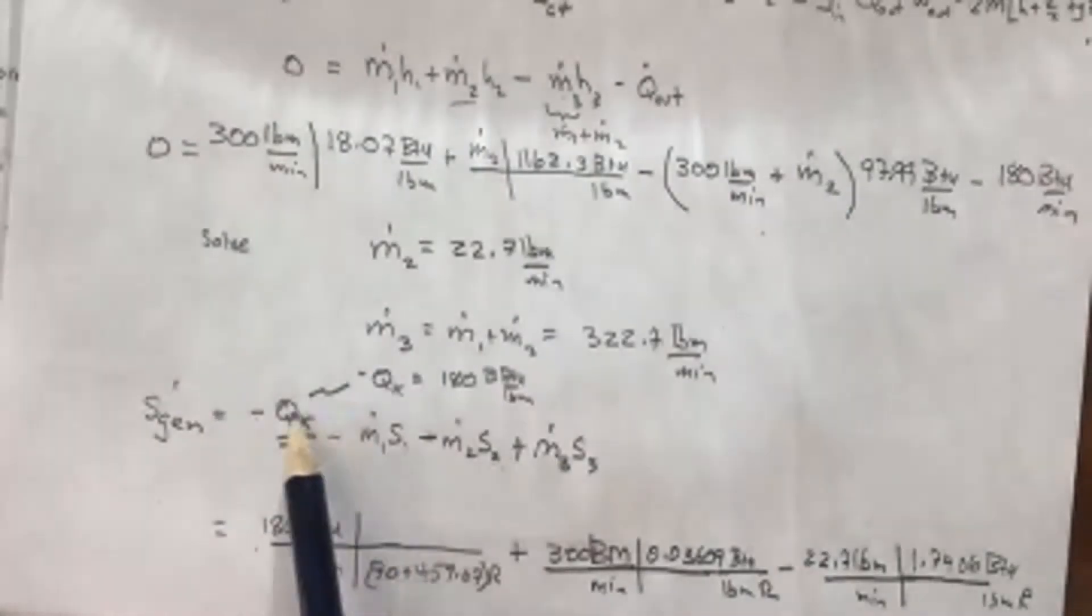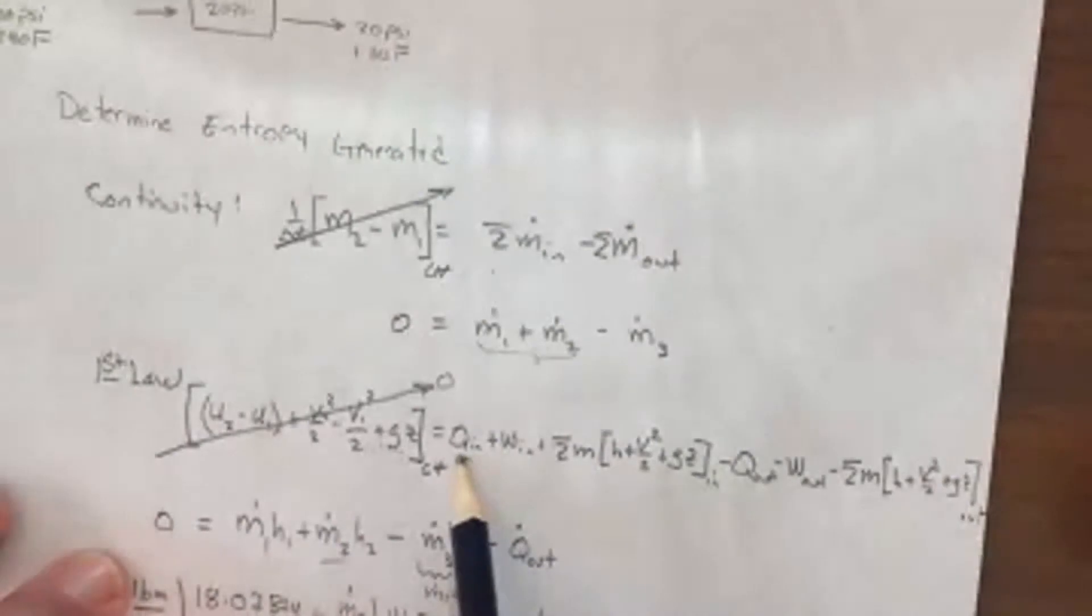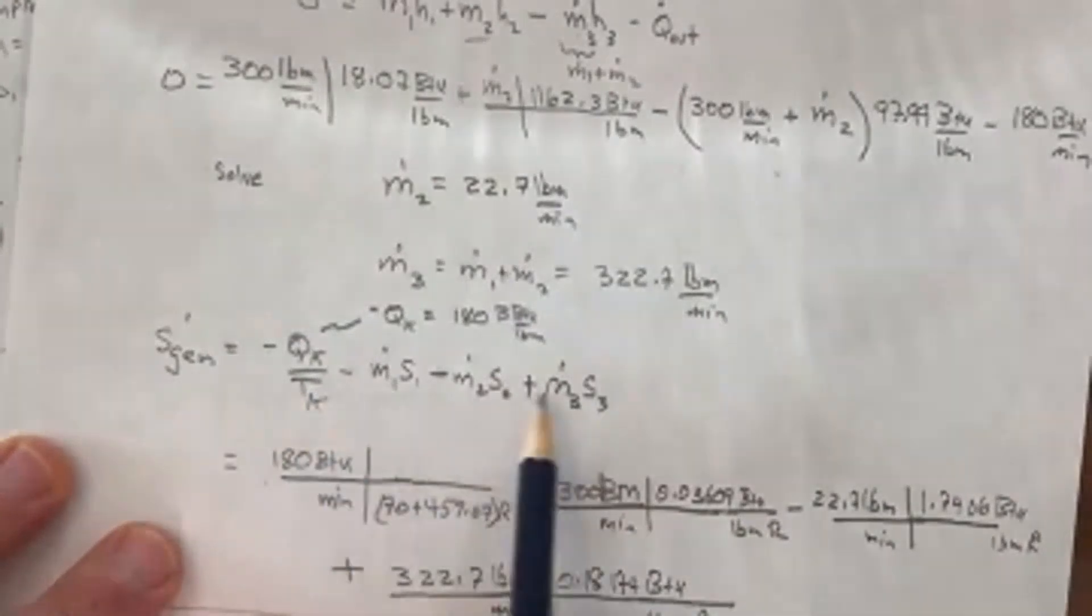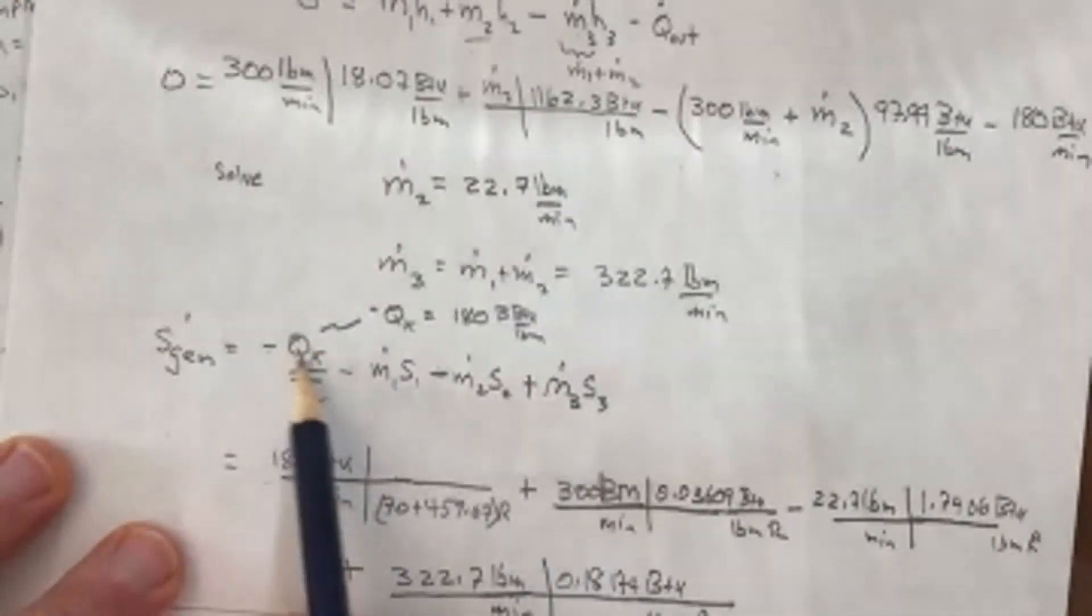So be careful with this sign convention. This is where it comes into play. In the first law, we specify whether it's in or out, and we always stick a positive number in there. And the sign is built in right there for the work and for the heat transfer. But when we talk about the second law or the entropy generation equation, we have to be careful that we abide by the sign convention.